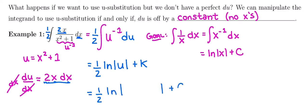And our last step is to just write it back as x's with a plus c at the end. So in terms of x's, we have 1 half ln of x squared plus 1 plus c.